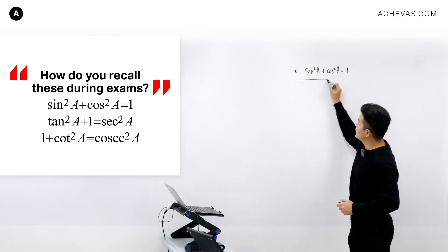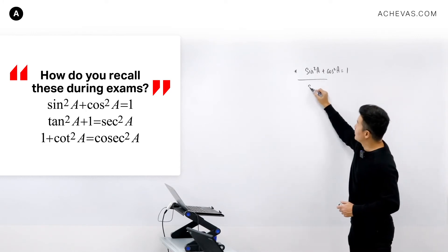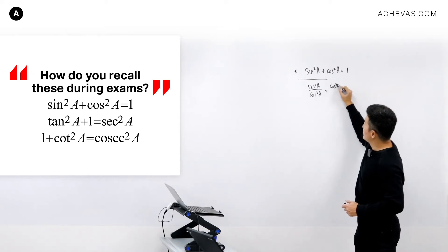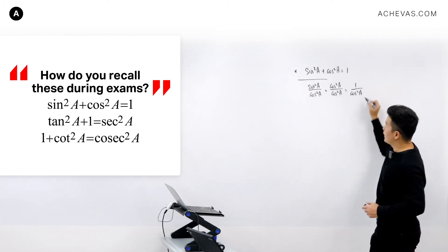What you can do is take this equation and divide throughout by cos²A. This will become sin²A divided by cos²A, and this will be cos²A divided by cos²A, and we will have 1 divided by cos²A.